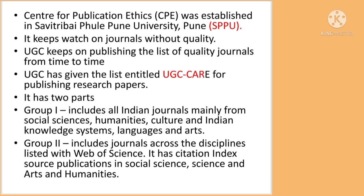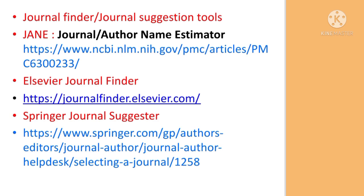UGC CARE has created two groups: List Group 1 and List Group 2. Group 1 includes Indian journals mainly from social sciences, humanities, culture, Indian knowledge systems, languages, and arts that meet quality criteria. Group 2 includes journals from across disciplines listed with Web of Science (SSCI, AHCI, SCIE) and Scopus.